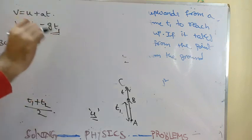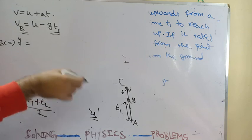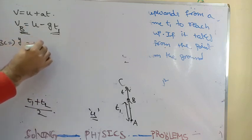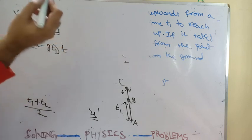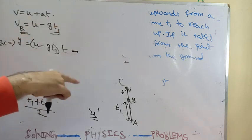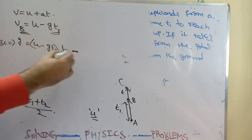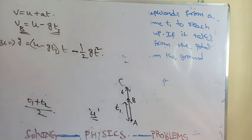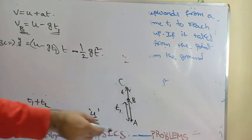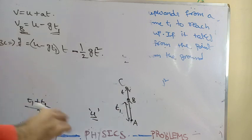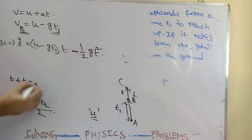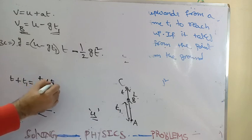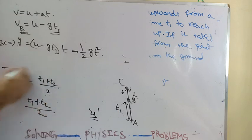Applying s = ut + ½at² from point B: the velocity at B is (u − g·t1), it takes time t to reach C, and gravity opposes motion, so: y = (u − g·t1)·t − ½g·t². Since time of ascent equals time of descent, the return from C to B also takes time t, so t1 + t = (t1 + t2) / 2.